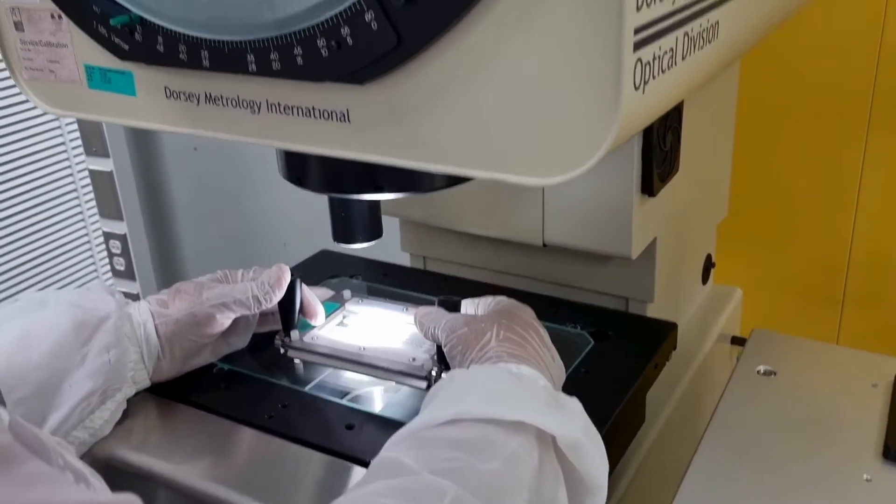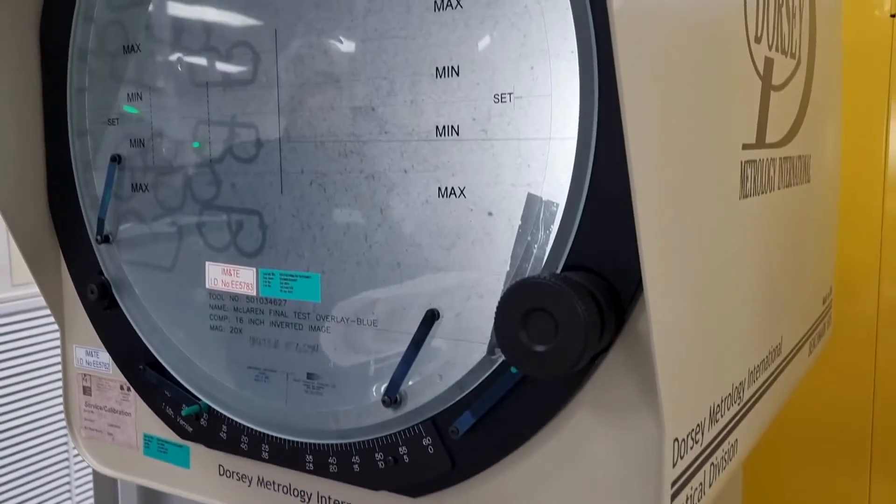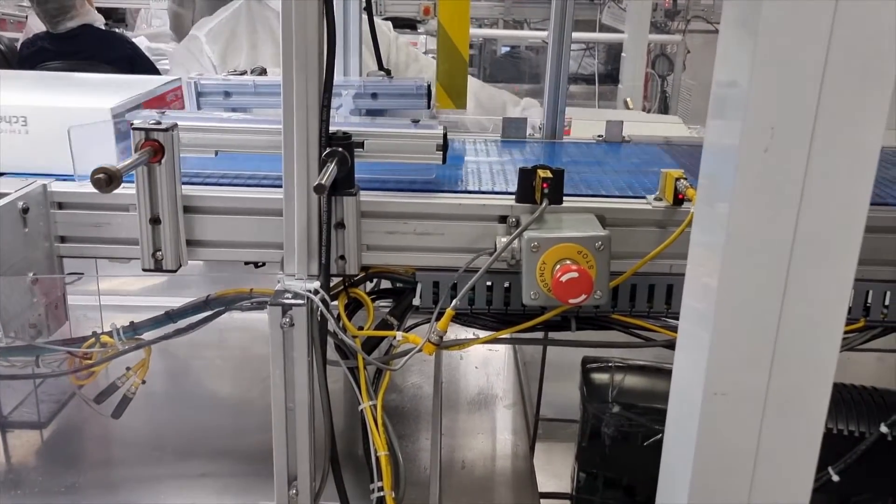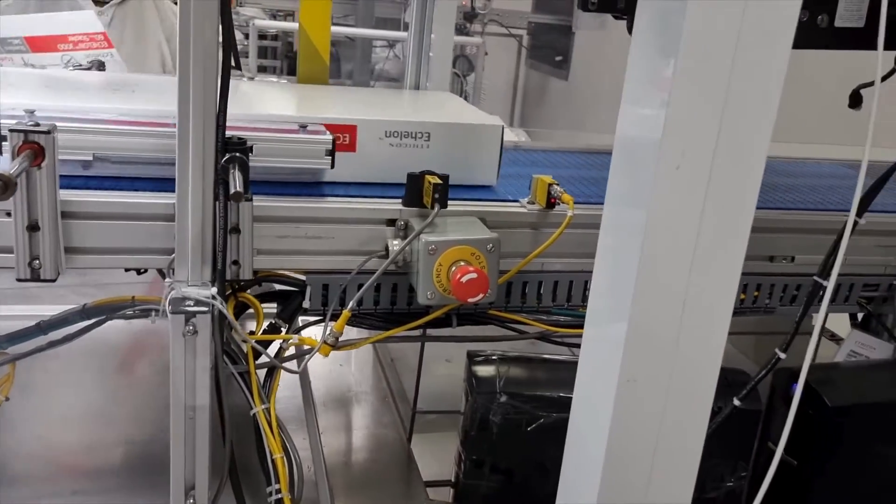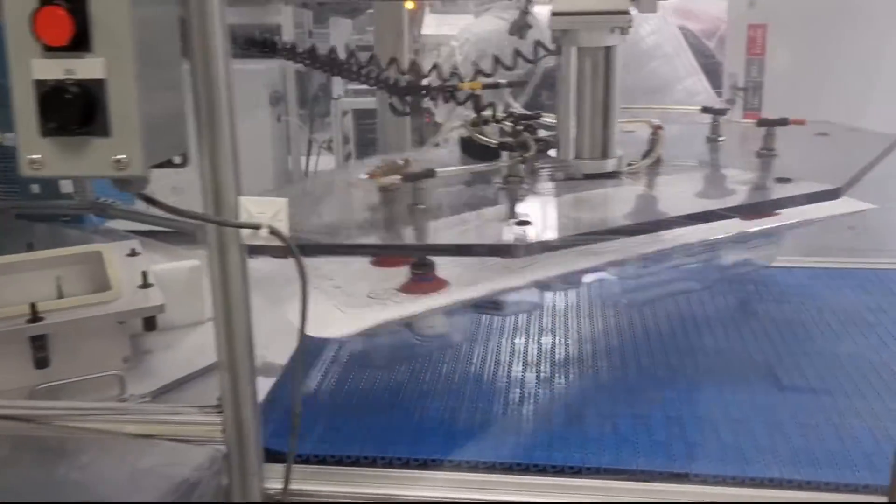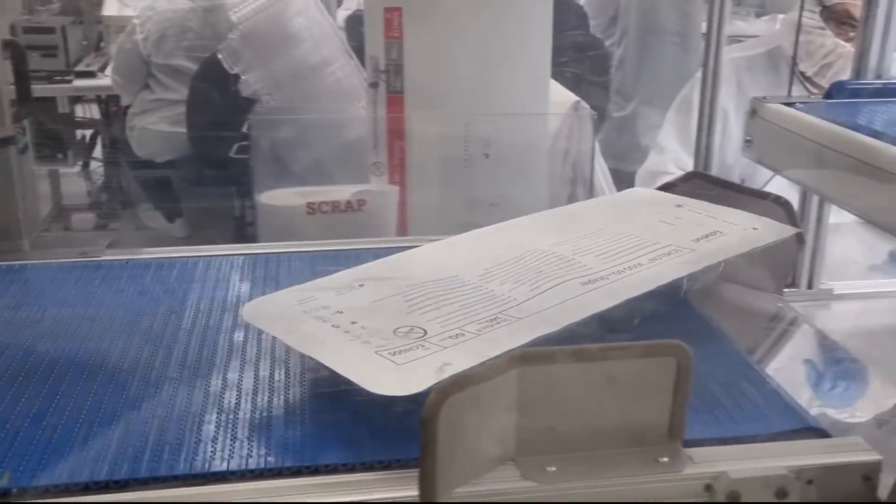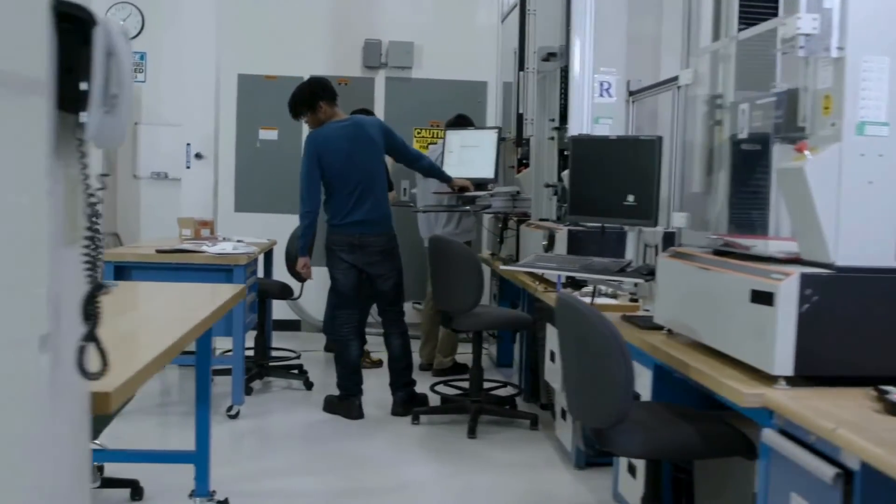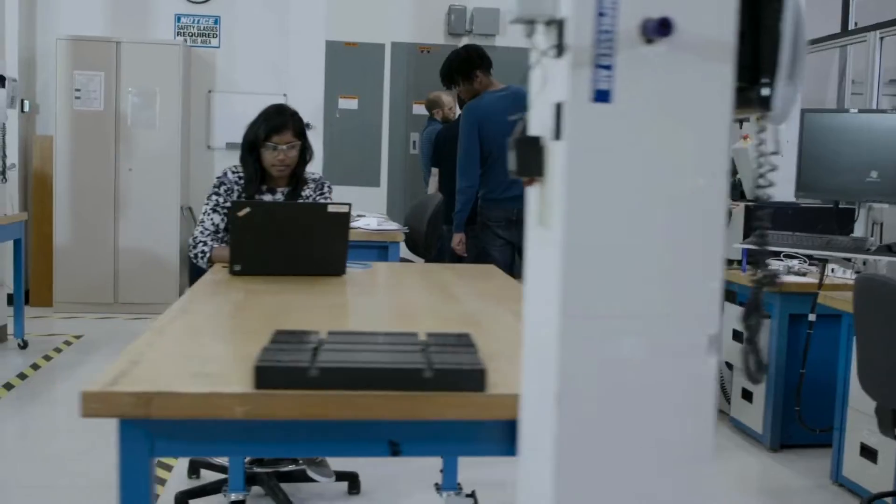We test fire every endo cutter to ensure proper function and staple formation before shipping. Machine and vision system inspections of final packaging for print and package integrity, including sealing inspection, print and color verification, and label and IFU correctness.